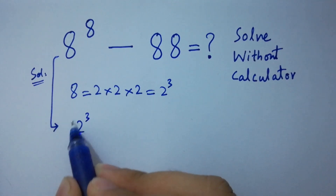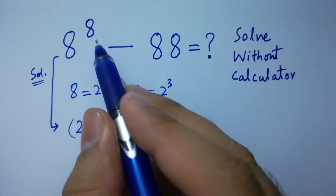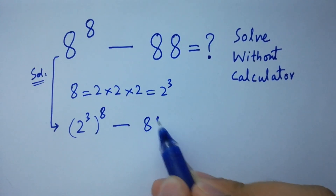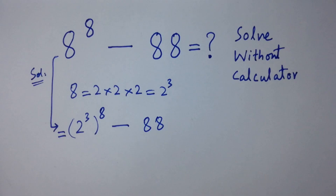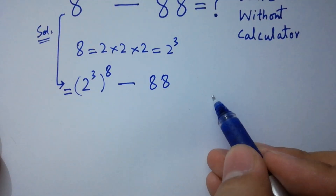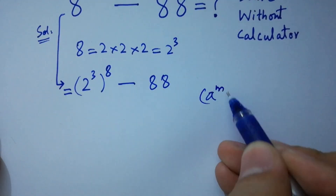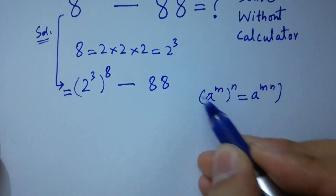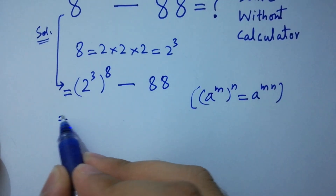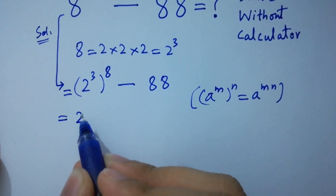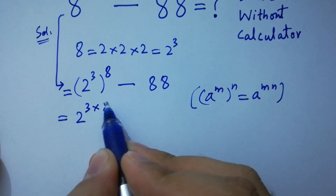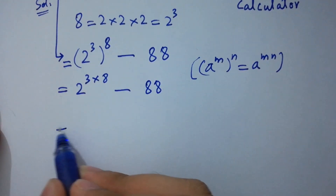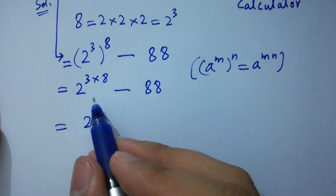So we have (2³)^8 minus 88. Using the rule a to the power m to the whole power n equals a to the power m×n, we get 2 to the power 3 times 8, which is 2 to the power 24, minus 88.